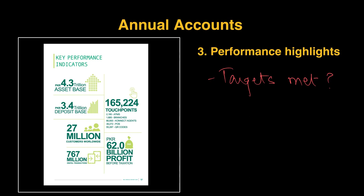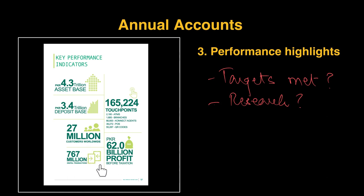Apart from that, you also need to find other comparison points — perhaps the research amount they're spending, and whether that's comparable to others. Here we can see different target points: they targeted that the asset base should be 4 trillion and they reached 4.3 trillion. They service 27 million customers worldwide, and there was a 62 billion profit. These are different targets they would have met, and the right platform to show them off is their annual accounts.